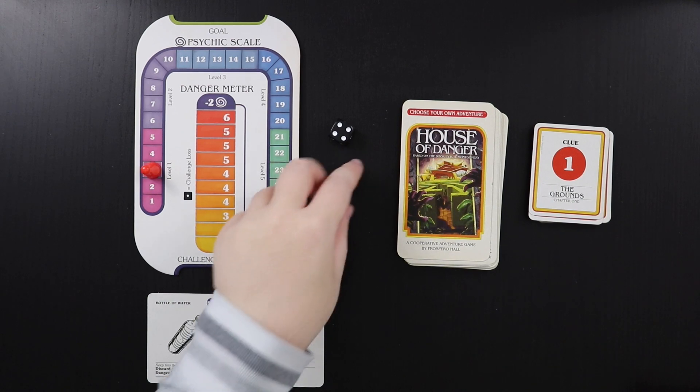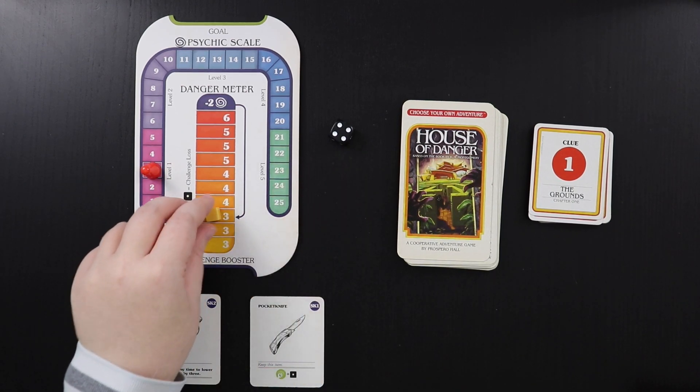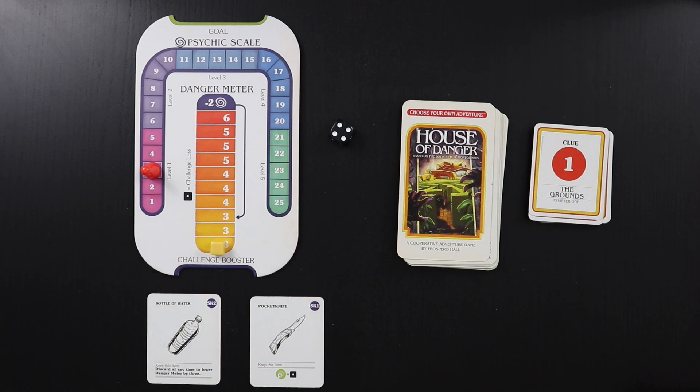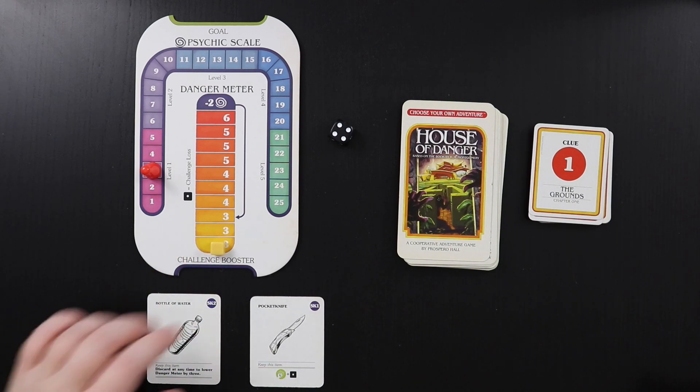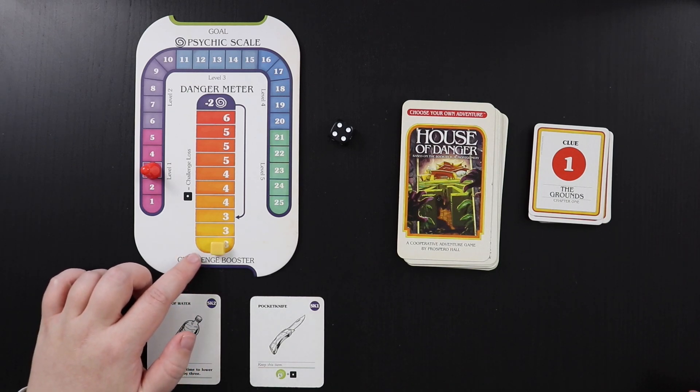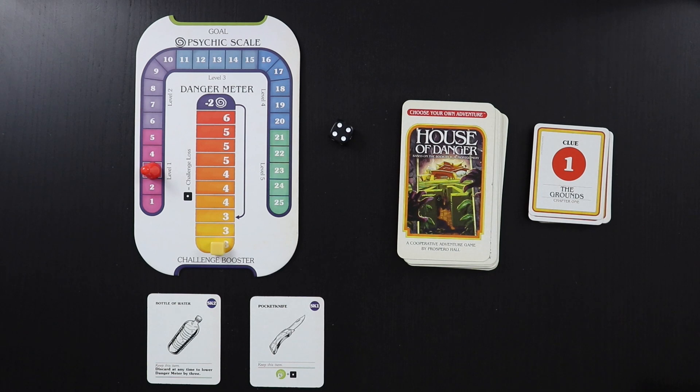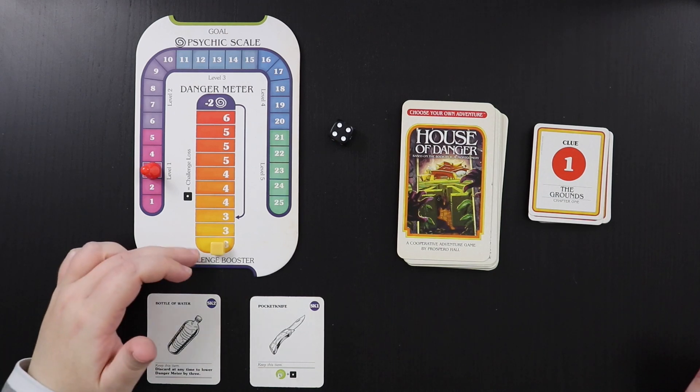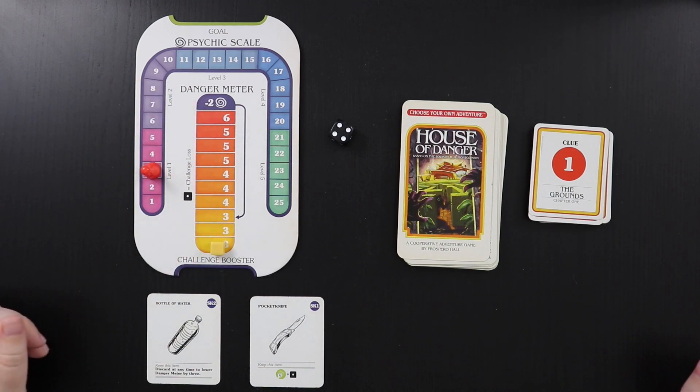You also put this little cube at number three here on the danger meter. Actually, I think you start at the very bottom. And the reason that you do this is because you're going to have little challenges throughout the game, and this is the threshold that you have to beat in order to pass challenges throughout the game. The sad part is, if you're a bad roller like me, a lot of times the penalty is increasing the danger, which means that you're just going to lose a lot.